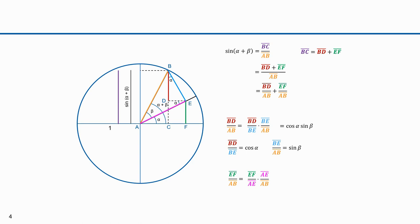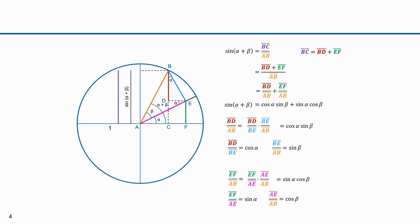This is line segment AE in magenta. EF over AB equals EF over AE times AE over AB — all we did was introduce AE in both the numerator and denominator. EF over AE is the opposite over hypotenuse for this angle alpha — it's the sine of alpha. AE over AB is the adjacent over hypotenuse for this angle beta — that's the cosine of beta. So EF over AE is sine alpha, and AE over AB is cosine beta. Therefore, BD over AB is cosine alpha times sine beta, and EF over AB is sine alpha times cosine beta. This is the trigonometric identity for the sum of two angles: sine of alpha plus beta equals cosine alpha times sine beta plus sine alpha times cosine beta.